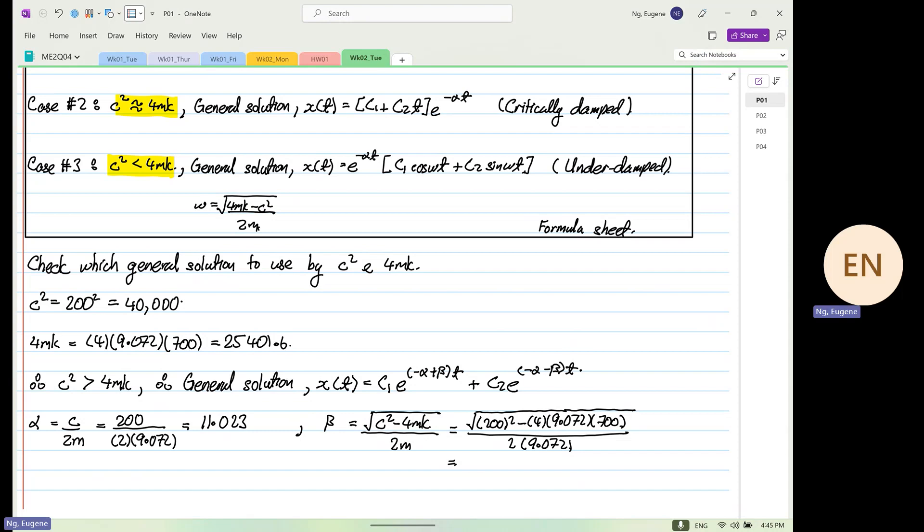200. Why am I pressing the calculator for that value again? Square root answer, divided by 2, divided by 9.072. So you'll get 6.659.